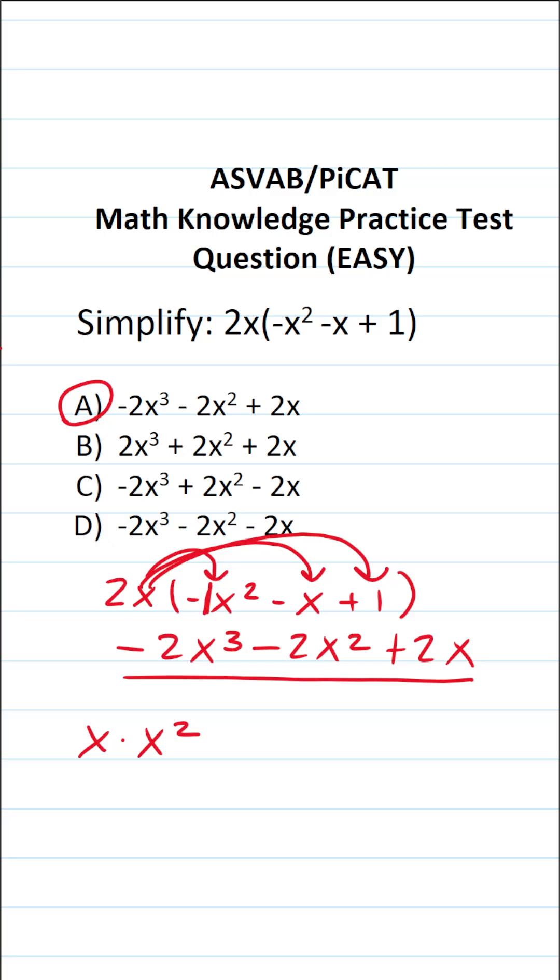Well, in order to multiply this, you have to know one of the laws of exponents called the product rule, which says if you have A to the M times A to the N, that's the same thing as A to the M plus N. That is to say you add their exponents.